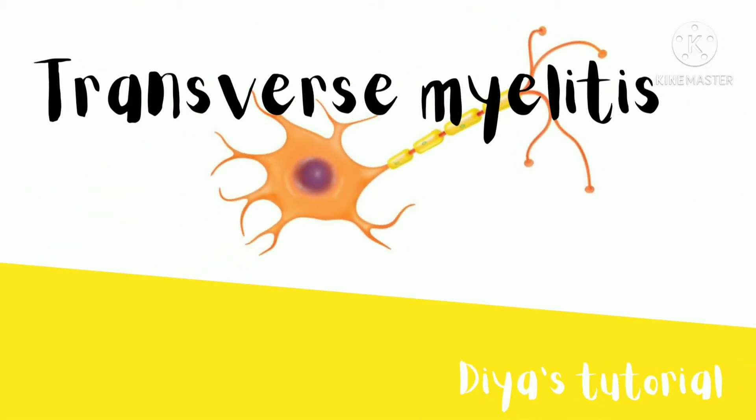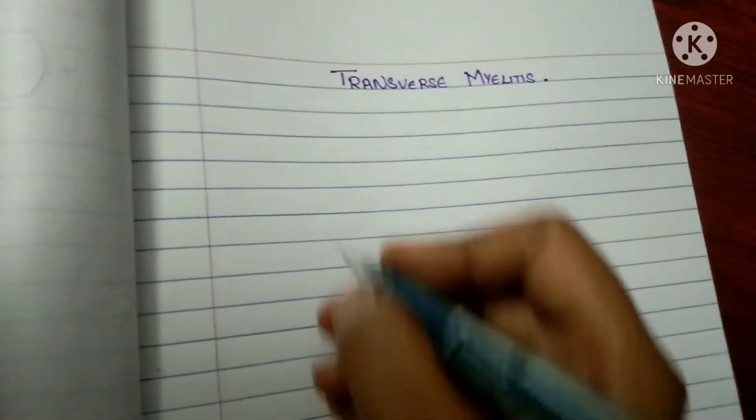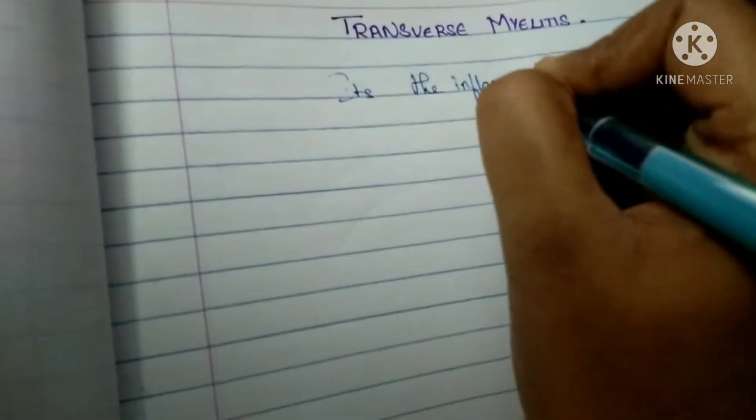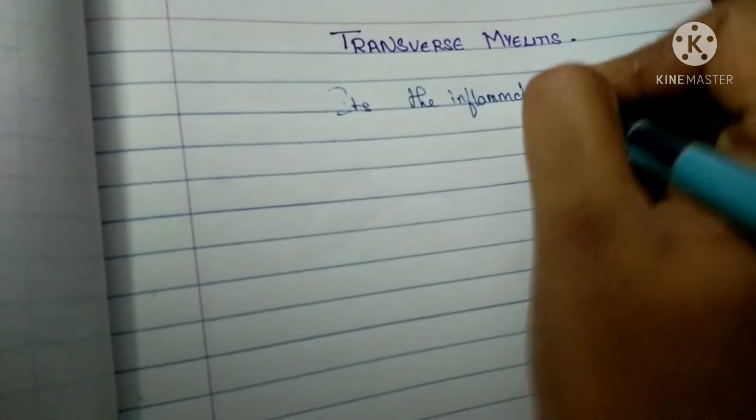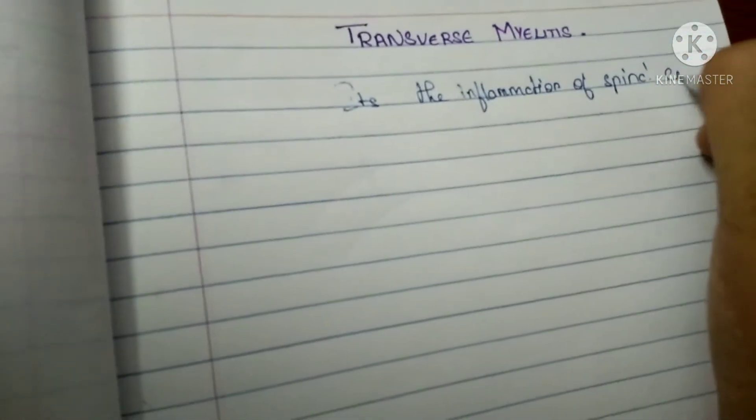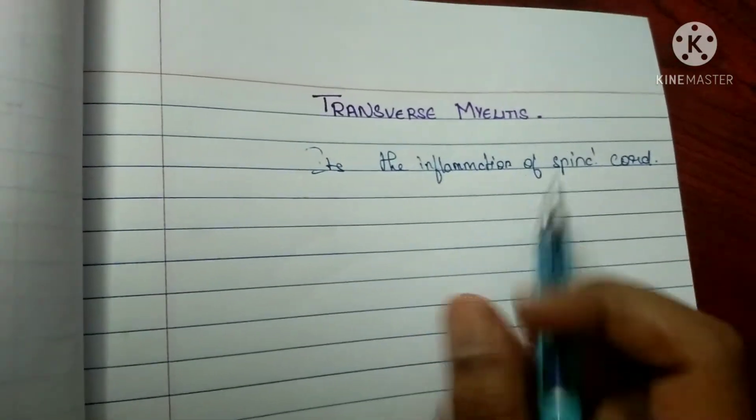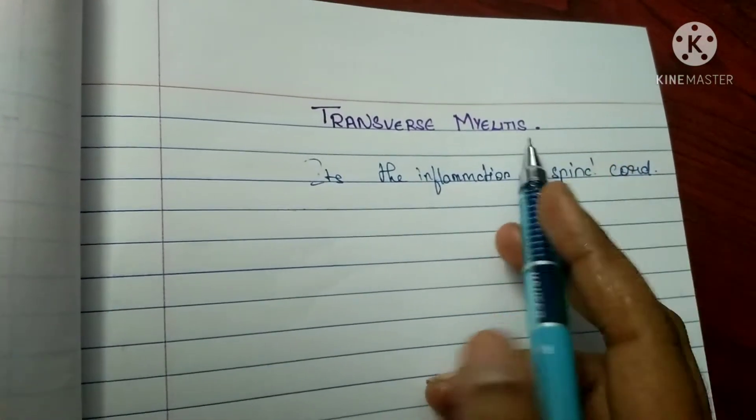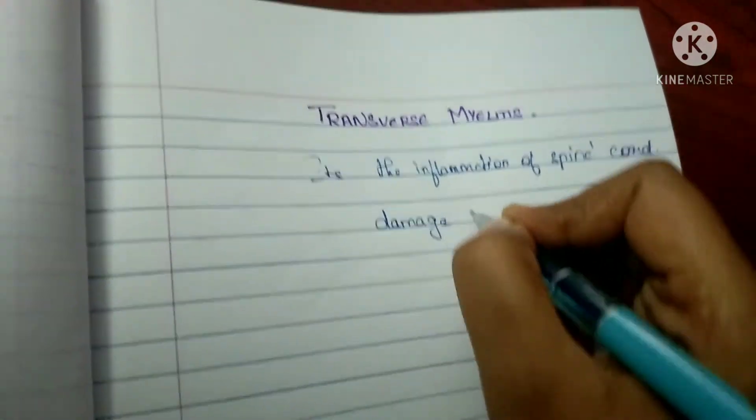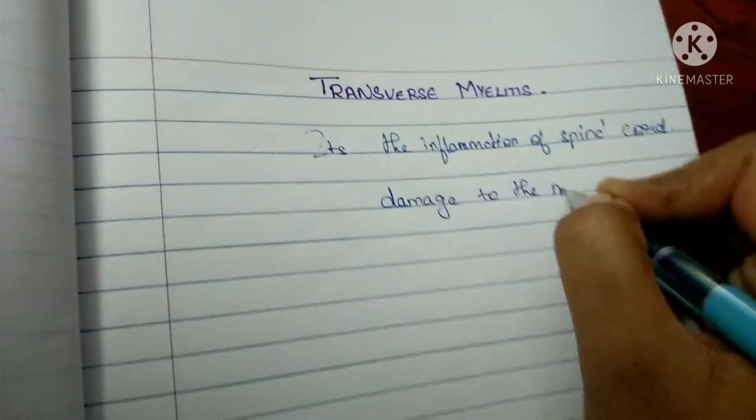Welcome to the tutorial. Today's topic is transverse myelitis. What is transverse myelitis? It is an inflammation of the spinal cord. Inflammation occurs on both sides of the spinal cord. From the name itself, we can understand: myelitis means inflammation of the myelin sheath. So transverse myelitis is the damage to the myelin sheath.